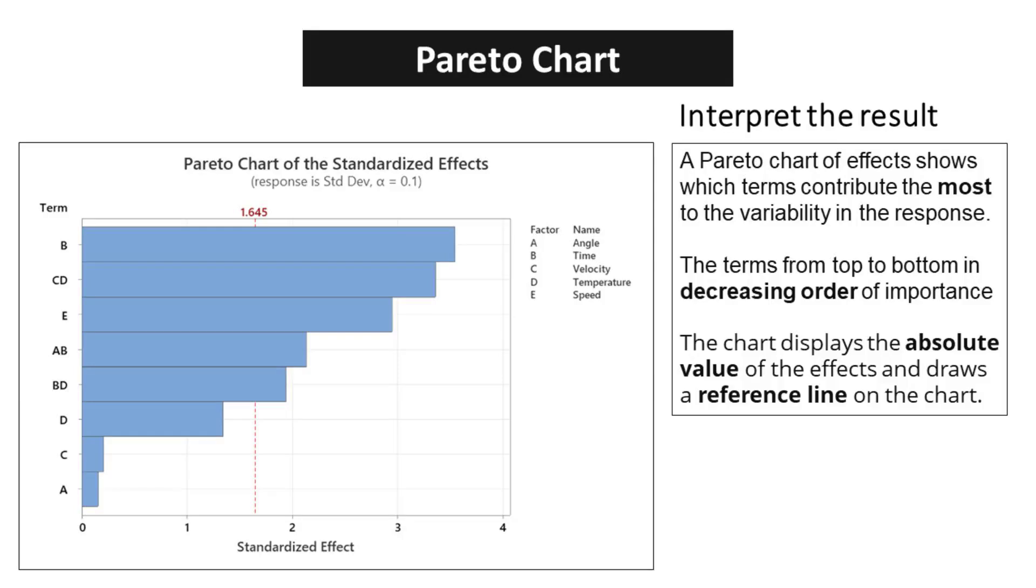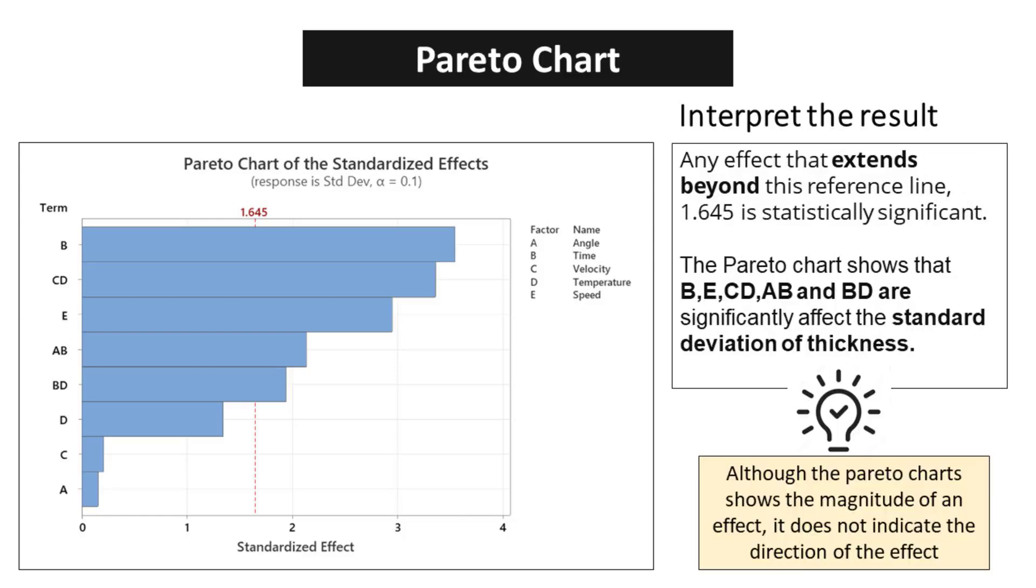A Pareto chart of effects shows which terms contribute the most to the variability in the response. The terms from top to bottom in decreasing order of importance. As we analyze the Pareto chart, we can clearly see the absolute value of the effects, providing us with valuable insights into where our focus should lie. The data at hand has revealed that any effect extending beyond the reference line of 1.645 is considered statistically significant.